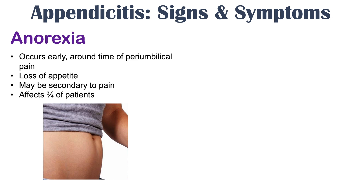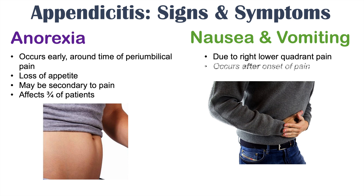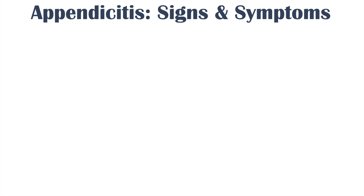Another symptom of appendicitis is nausea and vomiting, which is due to right lower quadrant pain and occurs after the onset of pain. If nausea and vomiting occurs before the onset of that generalized periumbilical pain, this suggests another condition — it is more likely that nausea and vomiting occurs after the onset of pain in appendicitis.